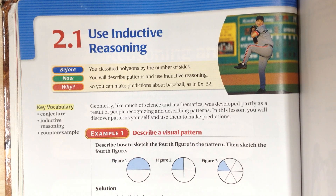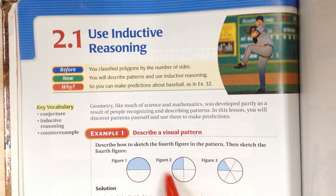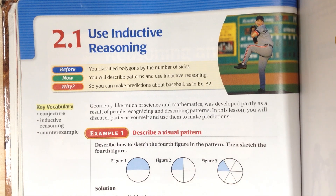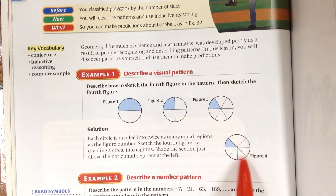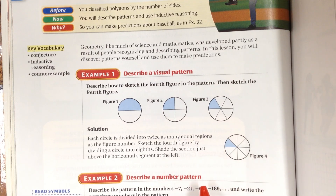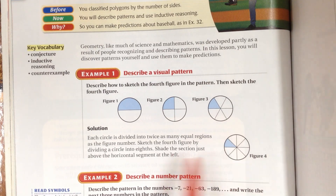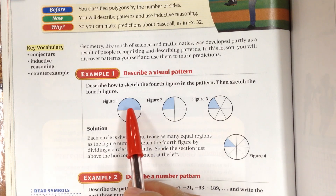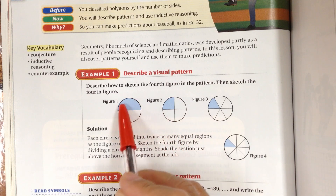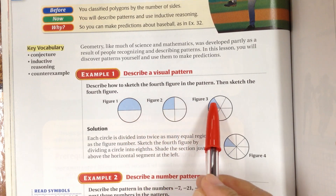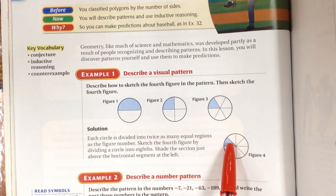So by using inductive reasoning, you count one, two, three — that means the next picture will have four diameters. Also notice the shaded area: you shade one region in each pattern. So figure 1, figure 2, figure 3 — one shaded region each, and so the fourth figure will also have one shaded region.